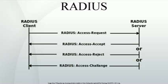The RADIUS server checks that the information is correct using authentication schemes such as PAP, CHAP, or EAP. The user's proof of identification is verified, along with, optionally, other information related to the request, such as the user's network address or phone number, account status, and specific network service access privileges. Historically, RADIUS servers checked the user's information against a locally stored flat file database. Modern RADIUS servers can do this, or can refer to external sources, commonly SQL, Kerberos, LDAP, or Active Directory servers, to verify the user's credentials.